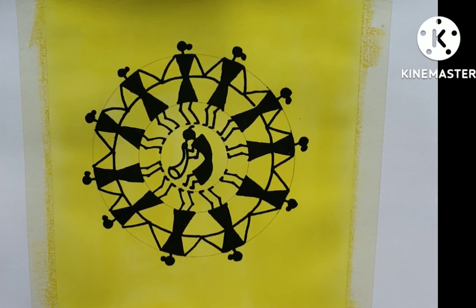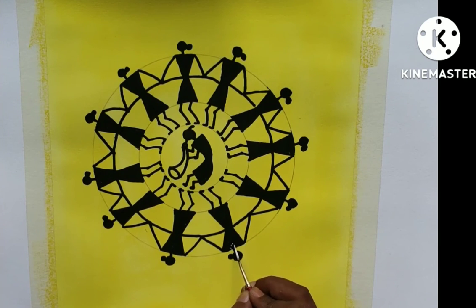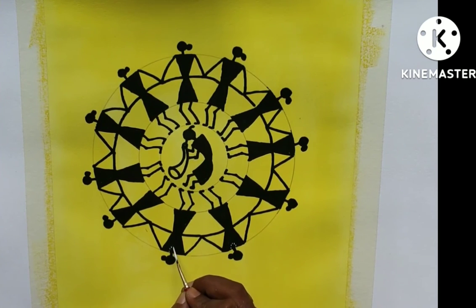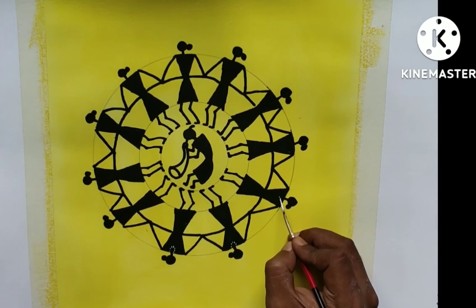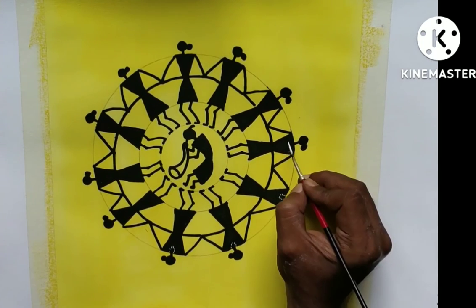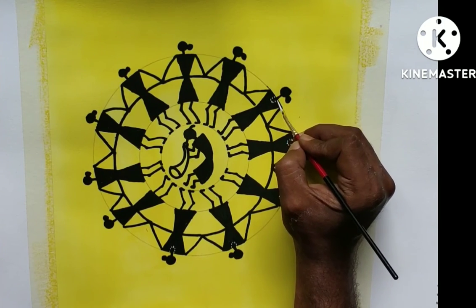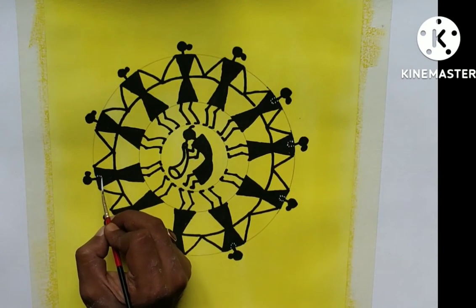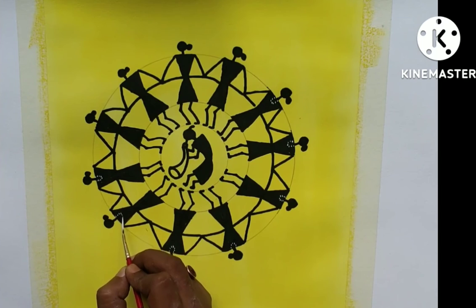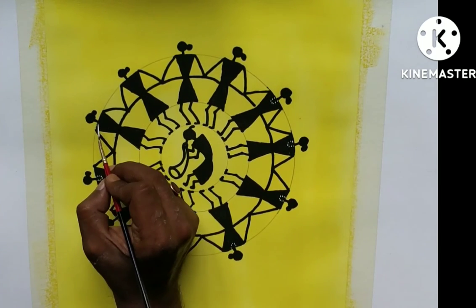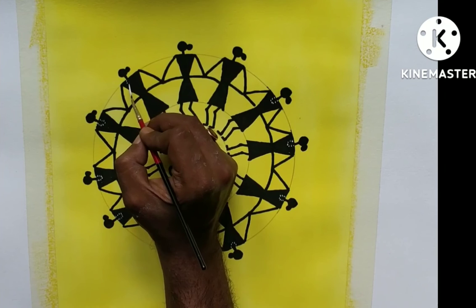And this painting is almost complete. Now I'm using some white color to create some ornaments on the figures. Maybe it looks better, but if you don't do it, it's also Warli art.